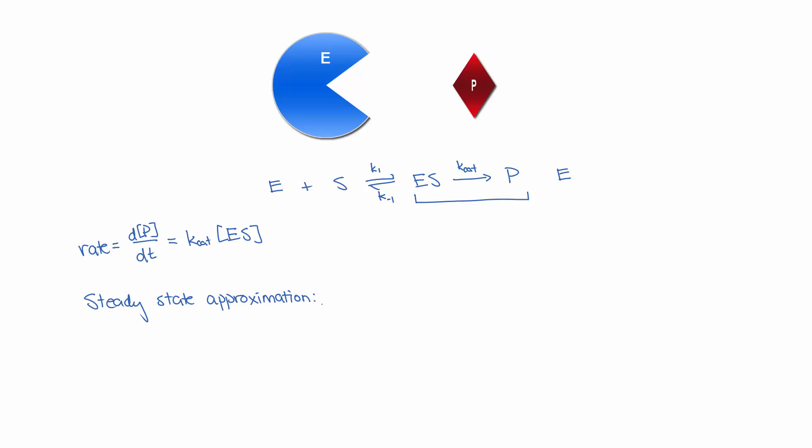In the steady state approximation, we assume that the change in the concentration of enzyme-substrate complex is constant over time. That is, if we add up all of the steps in which the enzyme-substrate complex is produced, and subtract the rate of all the steps where it's consumed, that will be equal to zero.